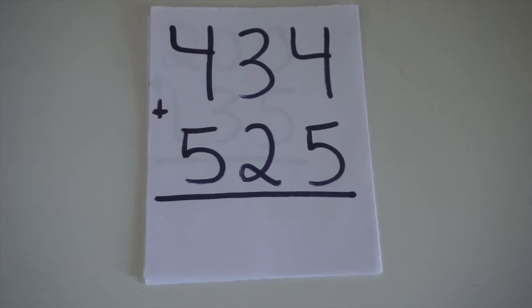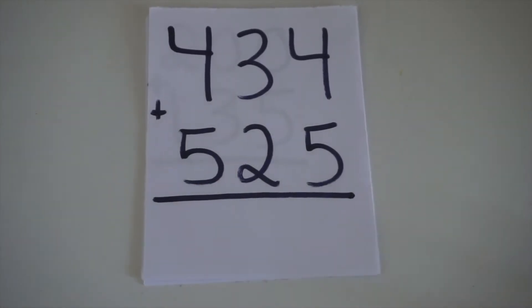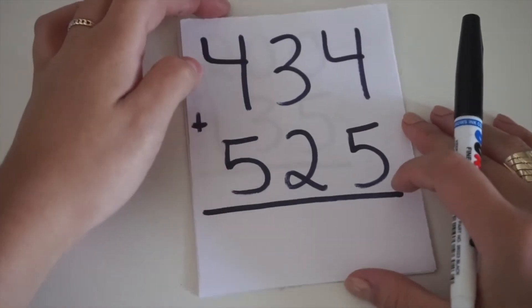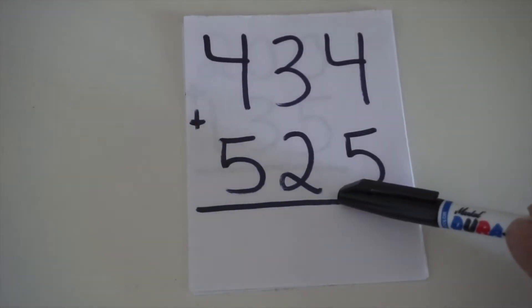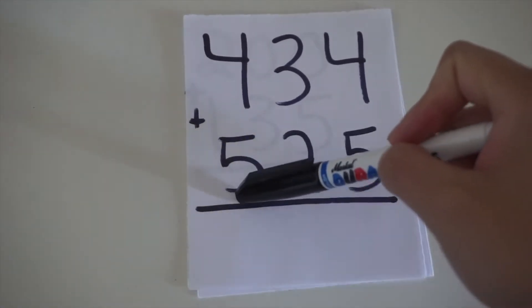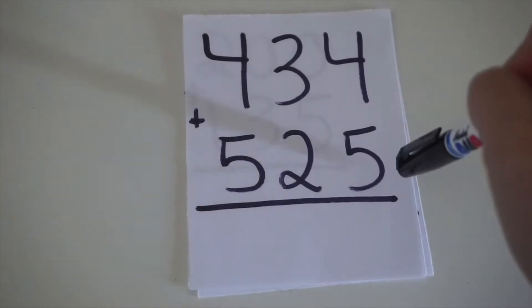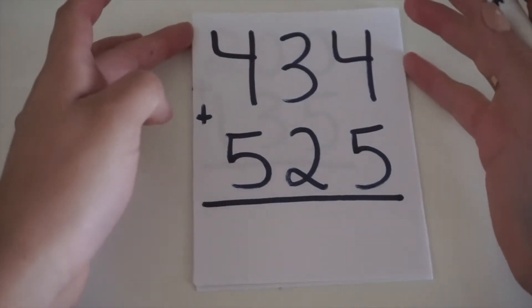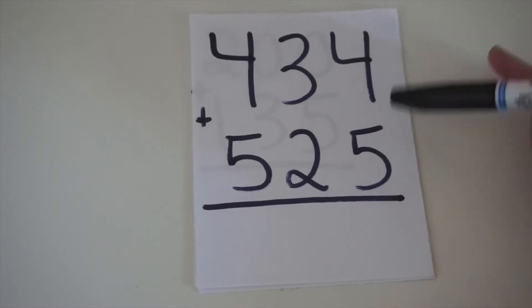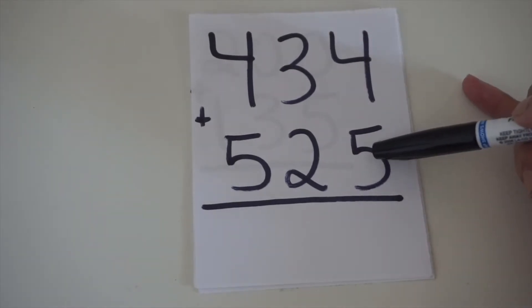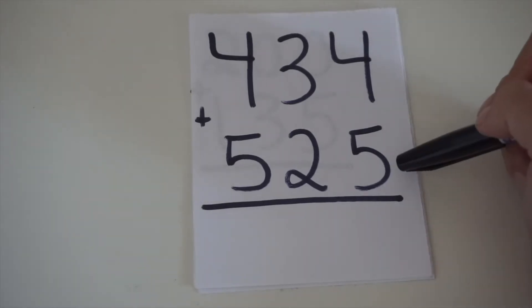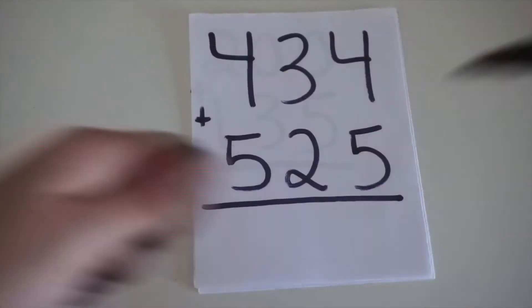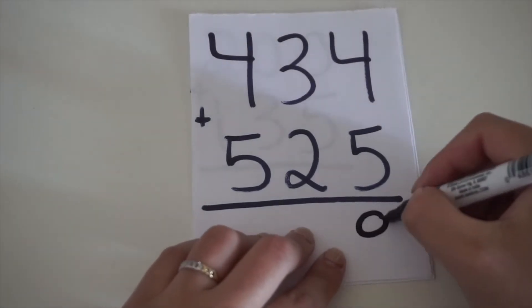Okay, so I have set up a couple of flashcards with some multi-digit math problems on them. Here is our first problem. We always start from right to left and up down. So, we're gonna add these two numbers. Since we always start from the right, we add up and down. So, 4 plus 5 equals 9.